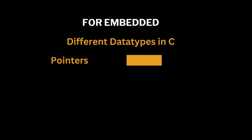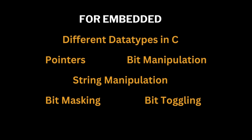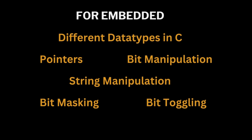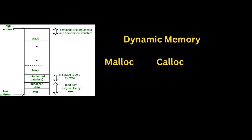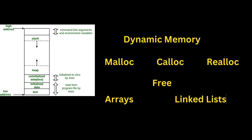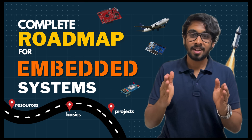For embedded, master different data types in C, pointers, bit manipulation, string manipulation, bit masking and bit toggling. Then understand the complete memory layout of C. Learn to create dynamic memory — know how to use malloc, calloc, realloc, and free. Then learn the basic data structures: arrays and linked lists. For a detailed explanation, you can watch the embedded roadmap video where C concepts for embedded are explained in detail.